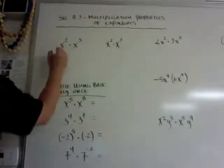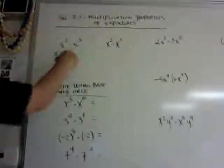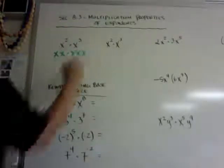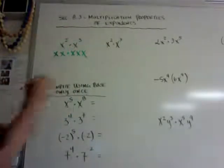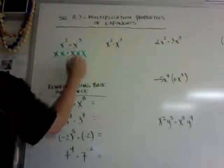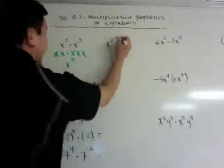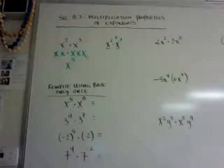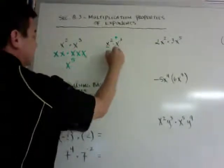So if I have x squared, that's like saying x times x. And if I have x cubed, that's like saying x times x times x. If I add them all up, I get x to the 5th power. The long way is to list them all out. Or the other way: if you have the same base and you're multiplying, you can just add the exponents — it becomes x to the 5th power.